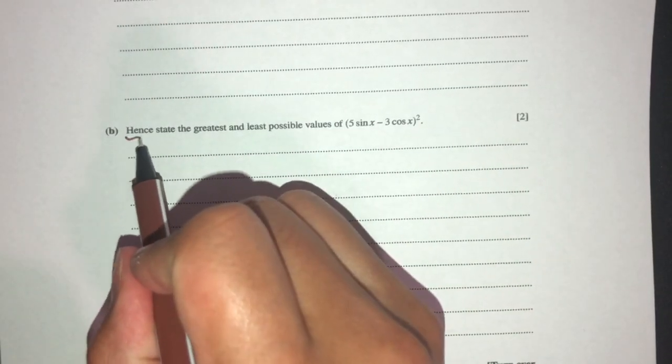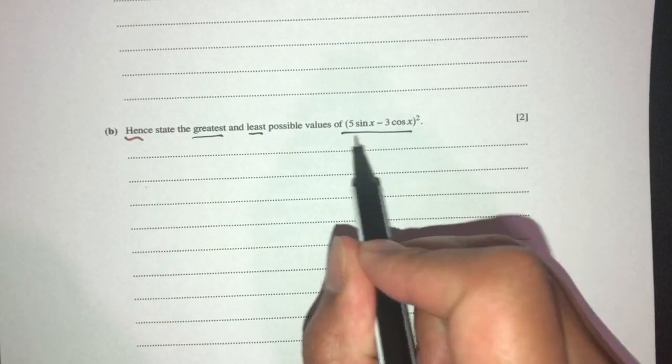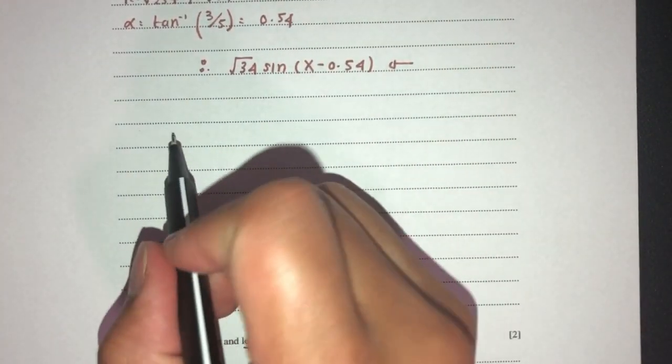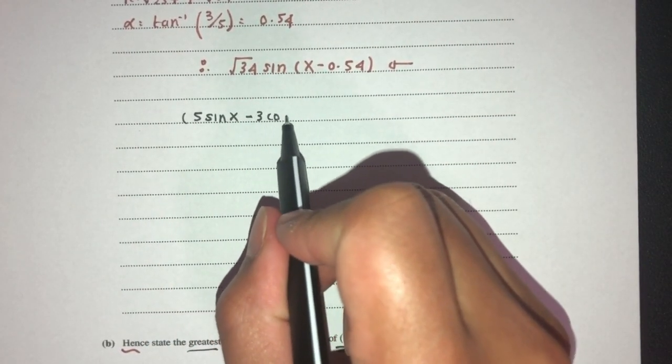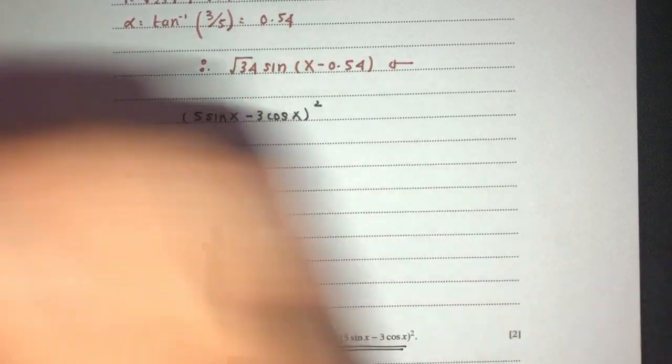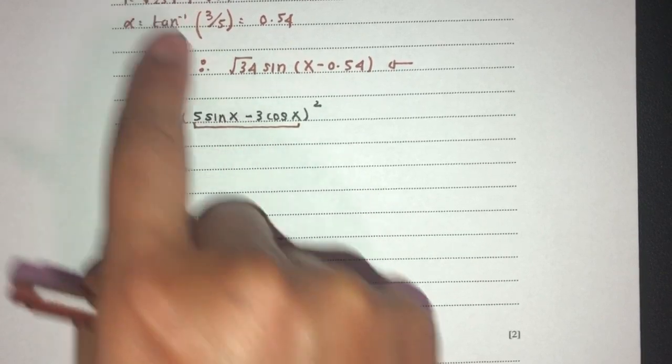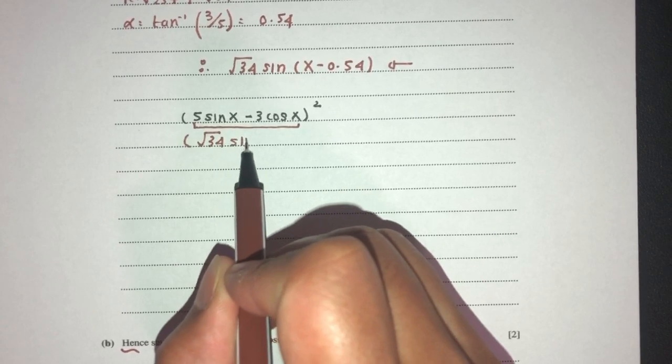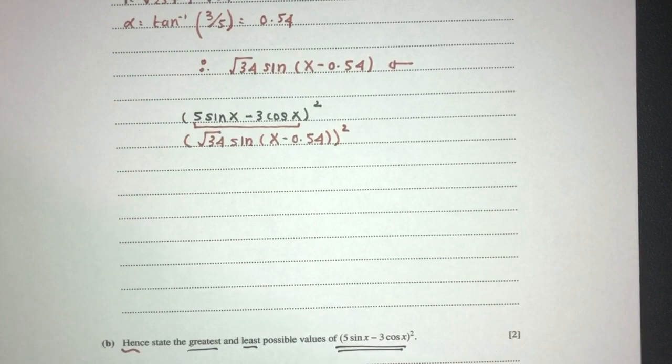For part b, hence - it means using this result - find the greatest and the least possible value of this. Now, let me write this over here. In the question below, we have (5 sin x - 3 cos x)². Now, we have seen this value here - well, we have shown this becomes this. So let's replace. That will become (√34 sin(x - 0.54))². Now, let's expand this.